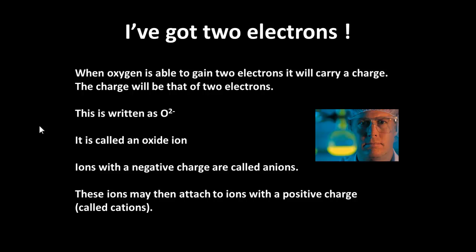And ions that have got a negative charge are called anions. And those, by the way, that have a positive charge are called cations. So a compound that's formed in this way by gaining or losing electrons is said to be an ionic compound.